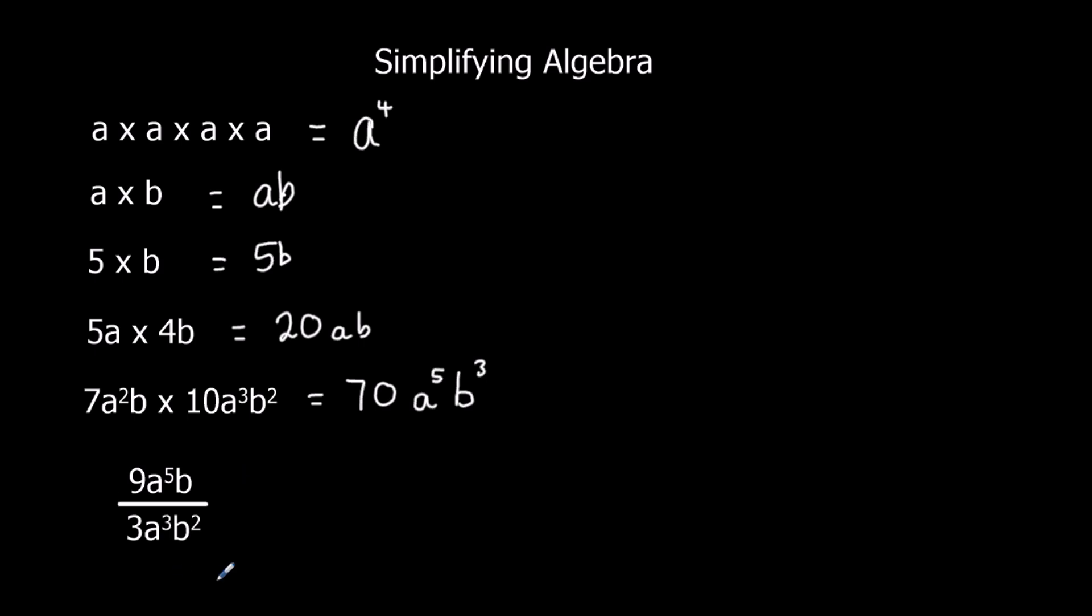The next one down here is the same, but it's division. So this is 9 divided by 3, which makes 3. a to the power of 5 divided by a cubed. When we divide, we take away the powers. 5 take away 3 is 2.